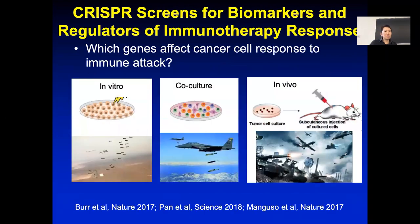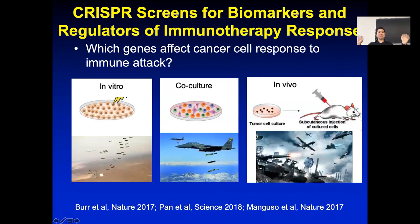CRISPR screens are also being used for immunotherapy and immune-related studies. One type of study uses cytokines that can directly kill cancer cells—if you treat cells with interferon, many cancer cells will die. Thinking of our body as a defense system, T cells are like the air force: they can drop bombs. You can treat cancer cells with cytokines and do a CRISPR screen to see what gene knockouts make the cancer cell respond better or worse to the cytokine treatment. This was published as a Nature paper last year.